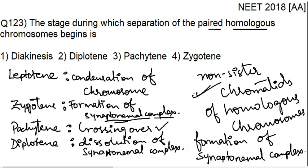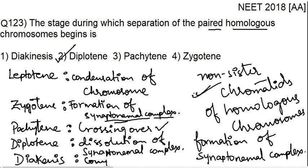When there is dissolution of the synaptonemal complex, the pair of homologous chromosomes starts getting separated. So our correct option is option number 2, that is diplotene. In diakinesis, all the homologous chromosomes are completely separated, but the question asks in which phase separation begins — so it begins in diplotene. Thank you.